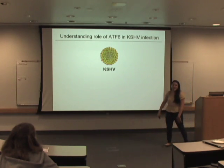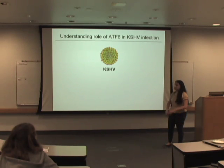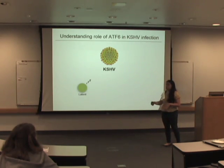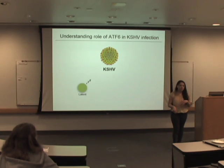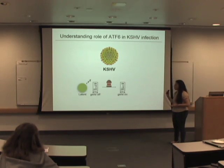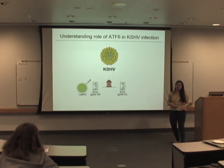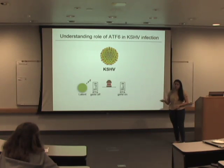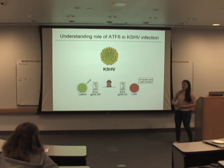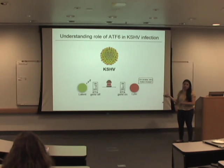KSHV has two main cycles: the latent cycle and the lytic cycle. In the latent cycle, the virus remains dormant in the cell — there's no viral production or replication. The cells we use literally shine green. These cells have a gene known as the replication and transcription activator, or RTA, which is basically the master switch. When it's off, the cell is under the latent cycle. When it's turned on with the drug doxycycline, you enter the lytic cycle, where a bunch of viruses are being made and the cells fluoresce red.